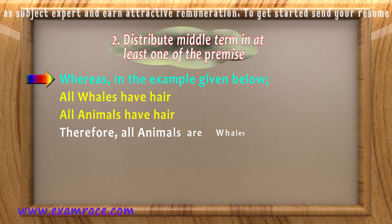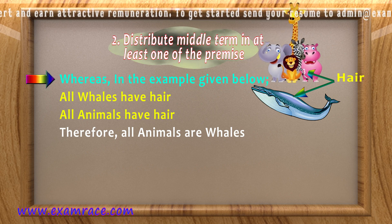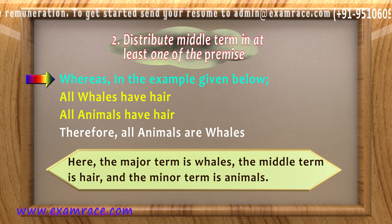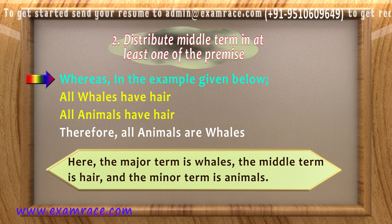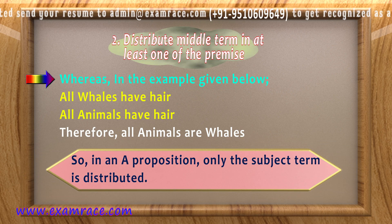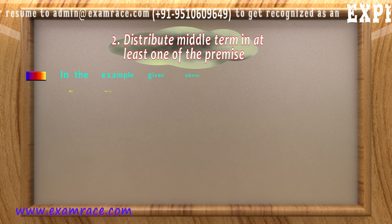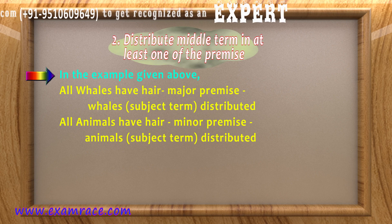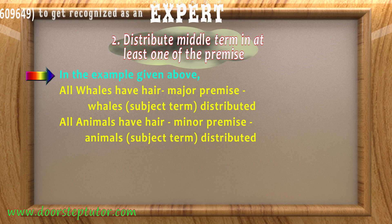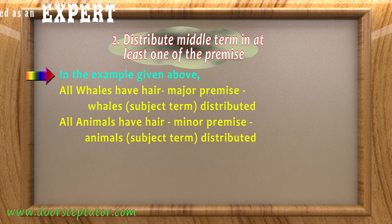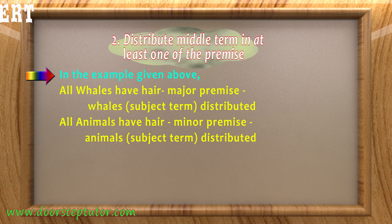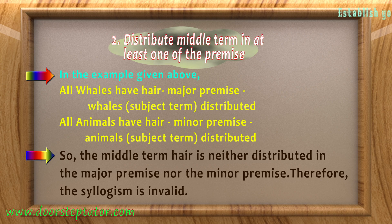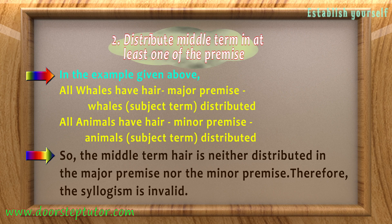In the example: 'All whales have hair; all animals have hair; therefore all animals are whales' — the major term is 'whales', the middle term is 'hair', and the minor term is 'animals'. In an A proposition, only the subject term is distributed. In the major premise, 'whales' is distributed as the subject; in the minor premise, 'animals' is distributed as the subject. So the middle term 'hair' is neither distributed in the major premise nor in the minor premise — therefore the syllogism is invalid.